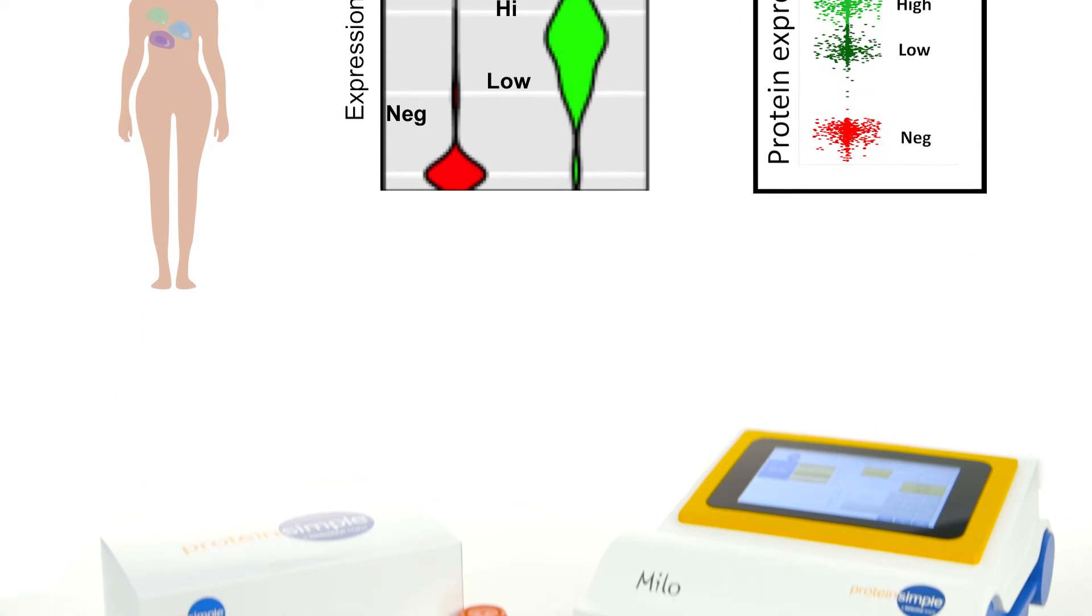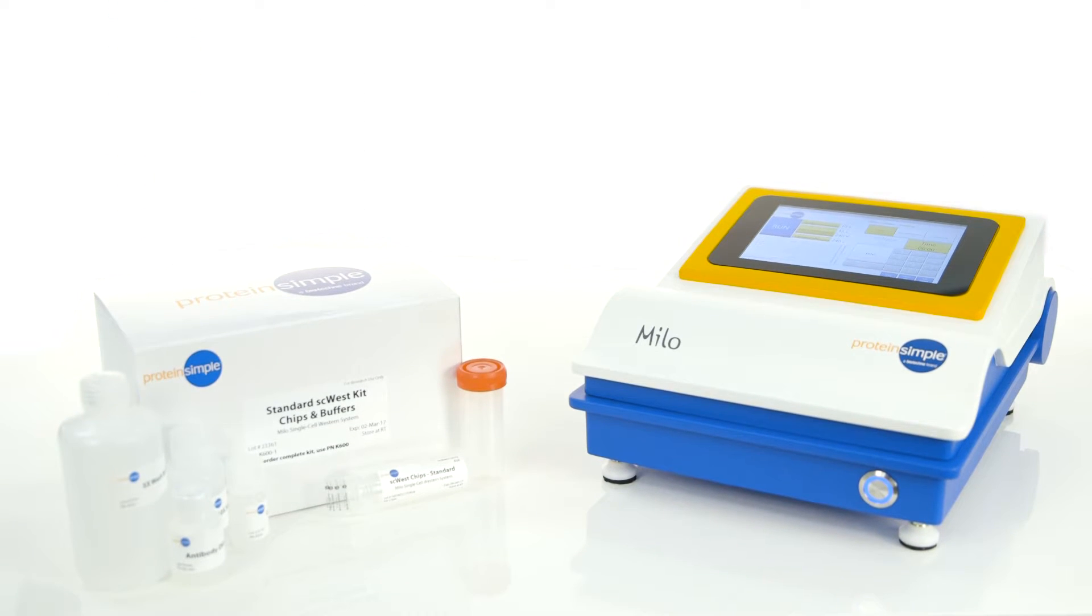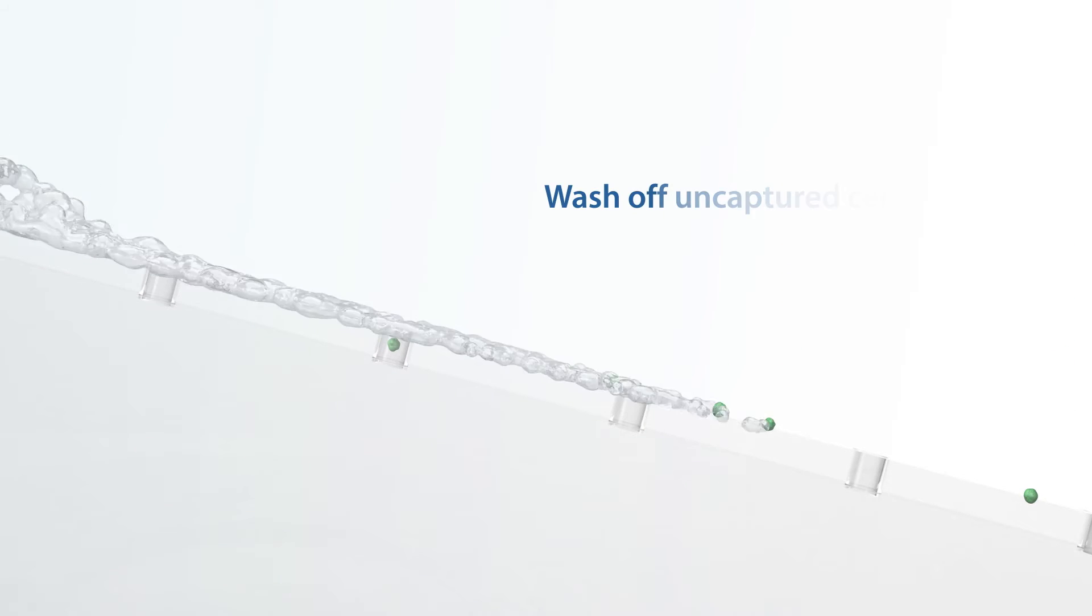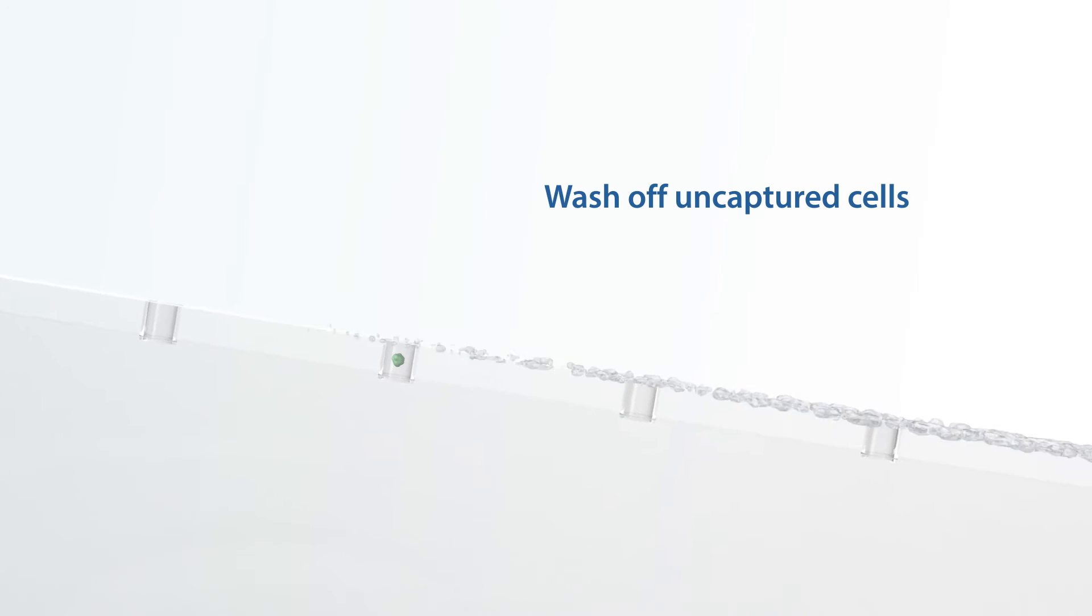Experiments with MILO are simple. You can get single-cell Western results in about 4 hours. All you do is load your cell suspension and the SC West chip partitions the cells in microwells, capturing approximately 1,000 single cells per chip.